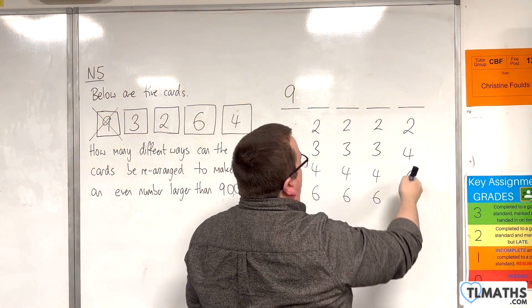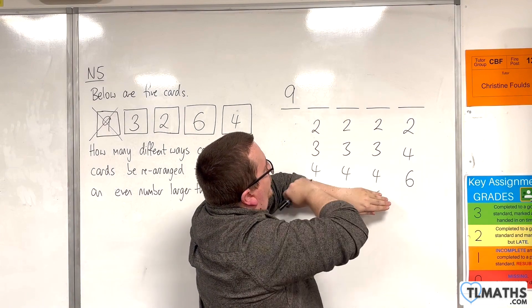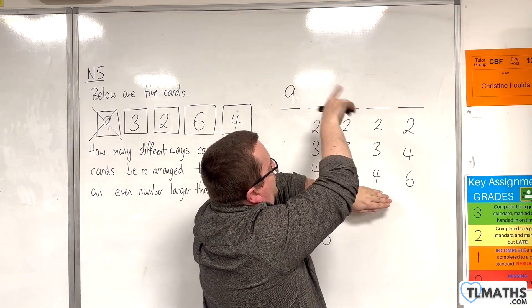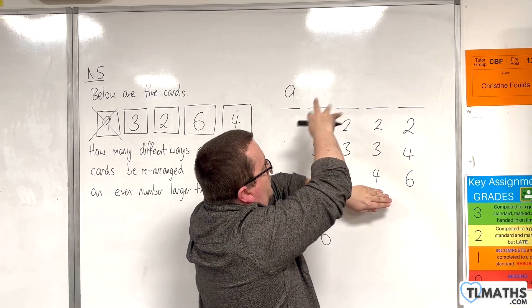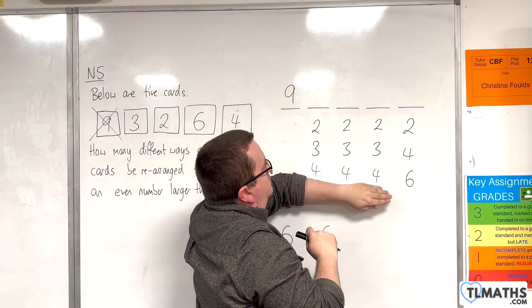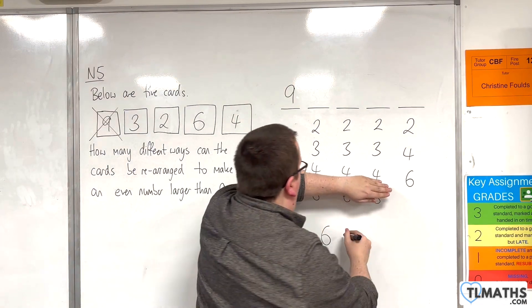If we choose the 6 on the end, then the 6s are gone. And then we've got 2, 3s, and 4s. So we could have 2, 3, 4, or 2, 4, 3, or 3, 2, 4, or 3, 4, 2, or 4, 2, 3, or 4, 3, 2. And so there are 6 options there as well.